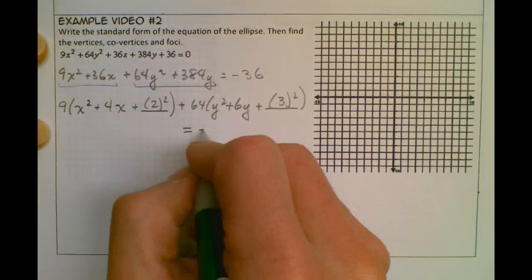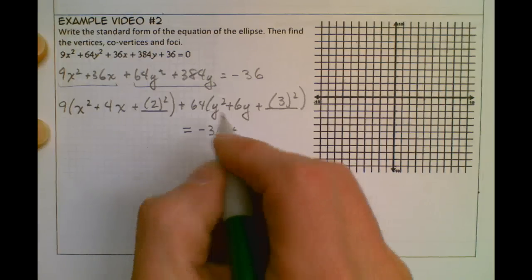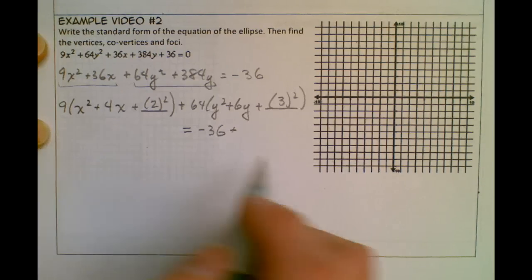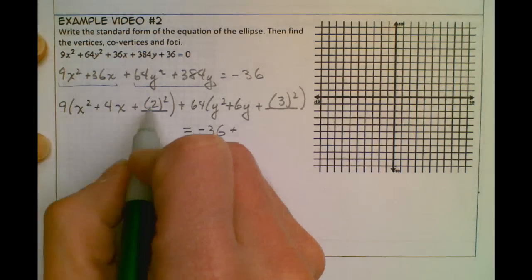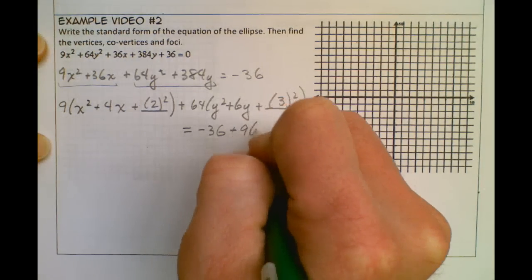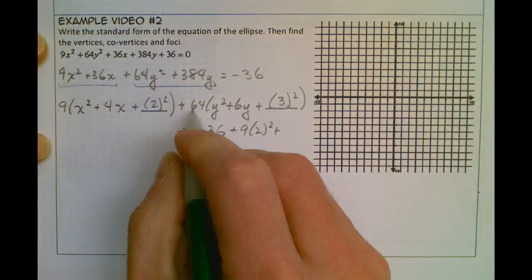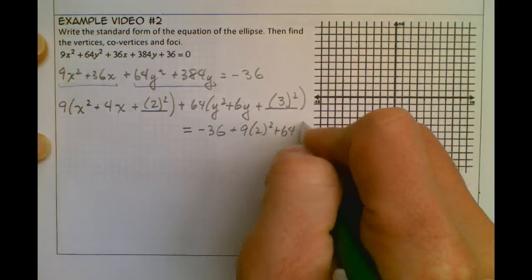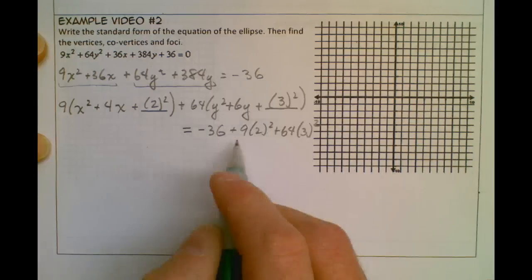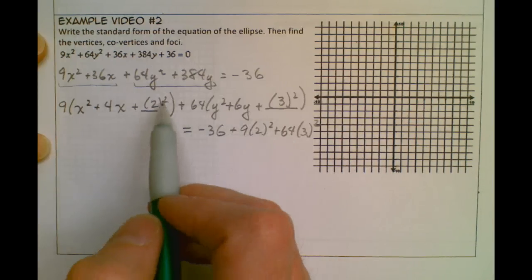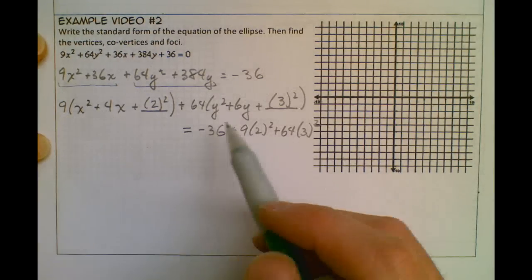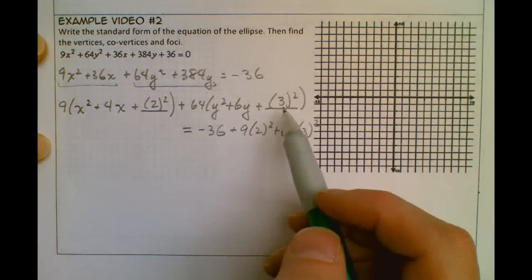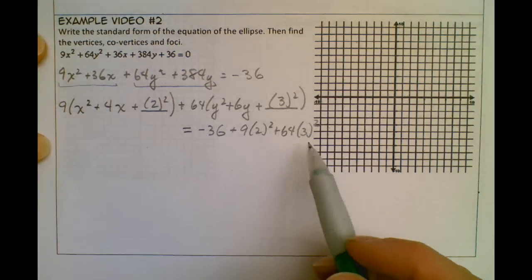And then equals, running out of room here, so equals negative 36, and then whatever I added on the left, I've got to add it also on the right. So over here I have 9 times 2², and over here I have 64 times 3². So don't forget this number that you factored out, because really this is 4 times 9, so I'm really adding 36 for the x's, and 64 times 9 for the y's, so I've got to put that over there.